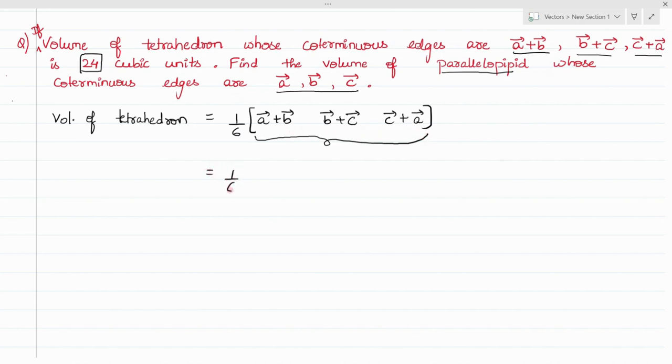This can be written as two times box [A,B,C], so it becomes one by three of box [A,B,C]. Here volume of tetrahedron is given as 24. Therefore, box [A,B,C], which is the volume of parallelepiped, becomes 72 cubic units. So this is the required answer to this question.